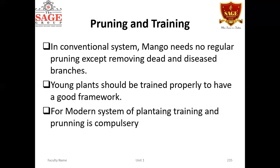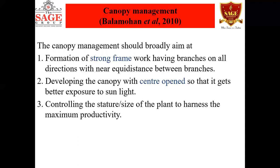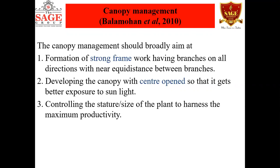In modern systems of planting — basically ultra high density or high density planting — training and pruning operations are very essential and compulsory, particularly canopy management. Because of land scarcity, people are reducing spacing and accommodating more trees per unit area. When more trees are planted, canopy management becomes necessary, otherwise natural growing canopies will intercept each other and cause problems in fruit production.